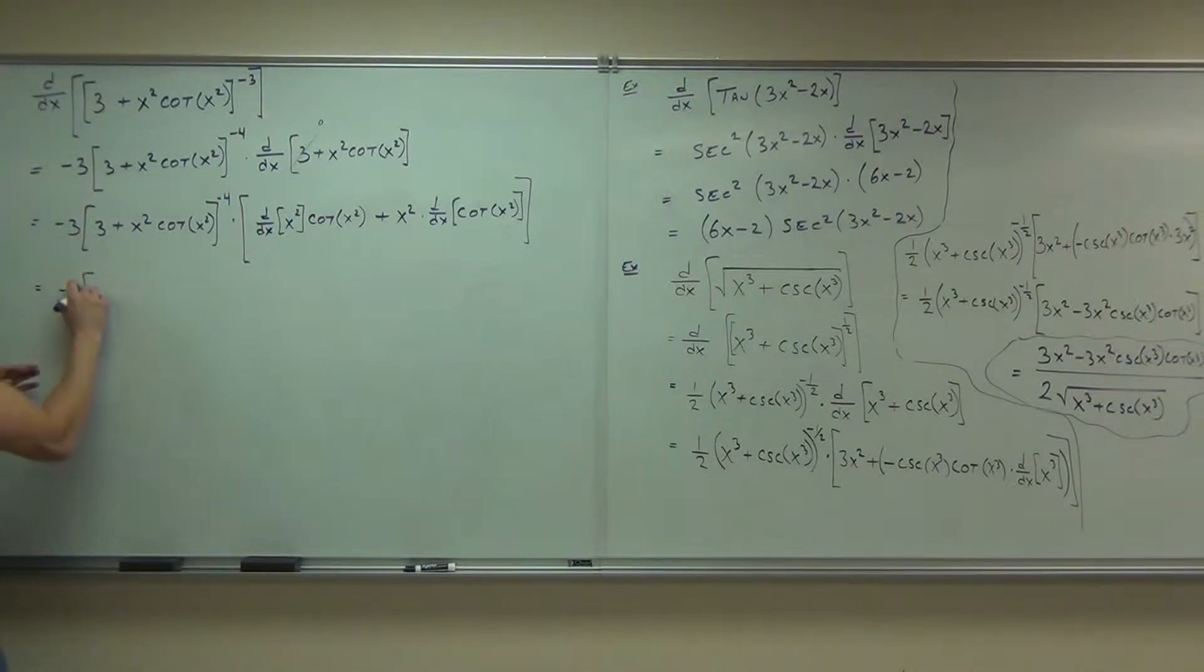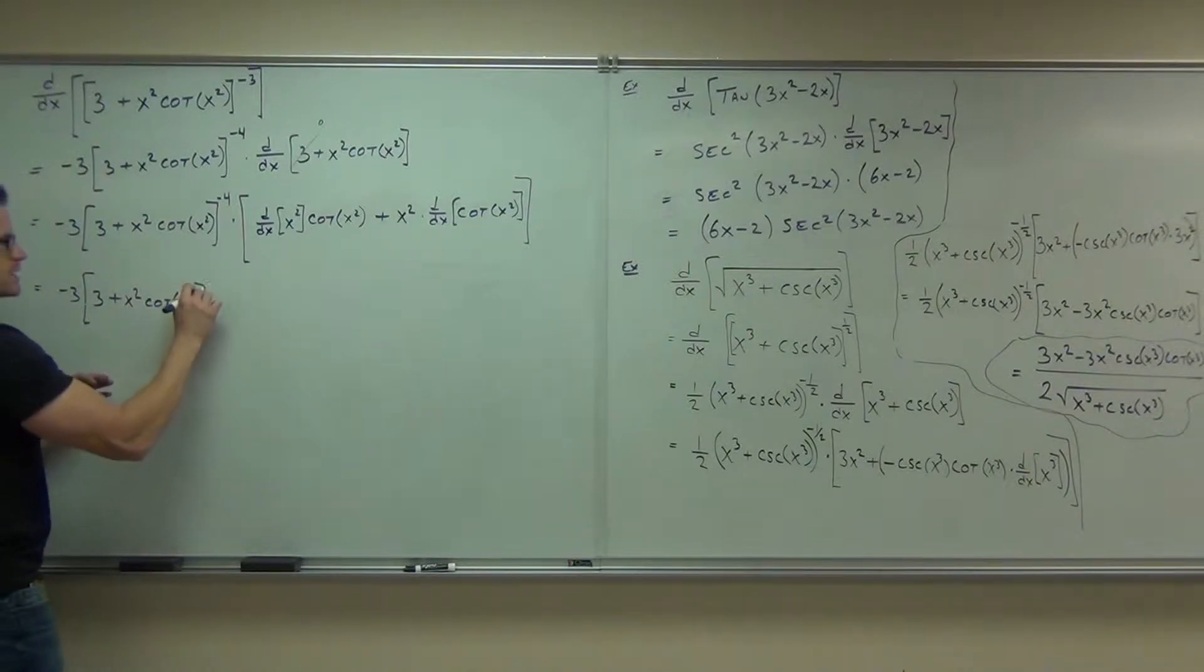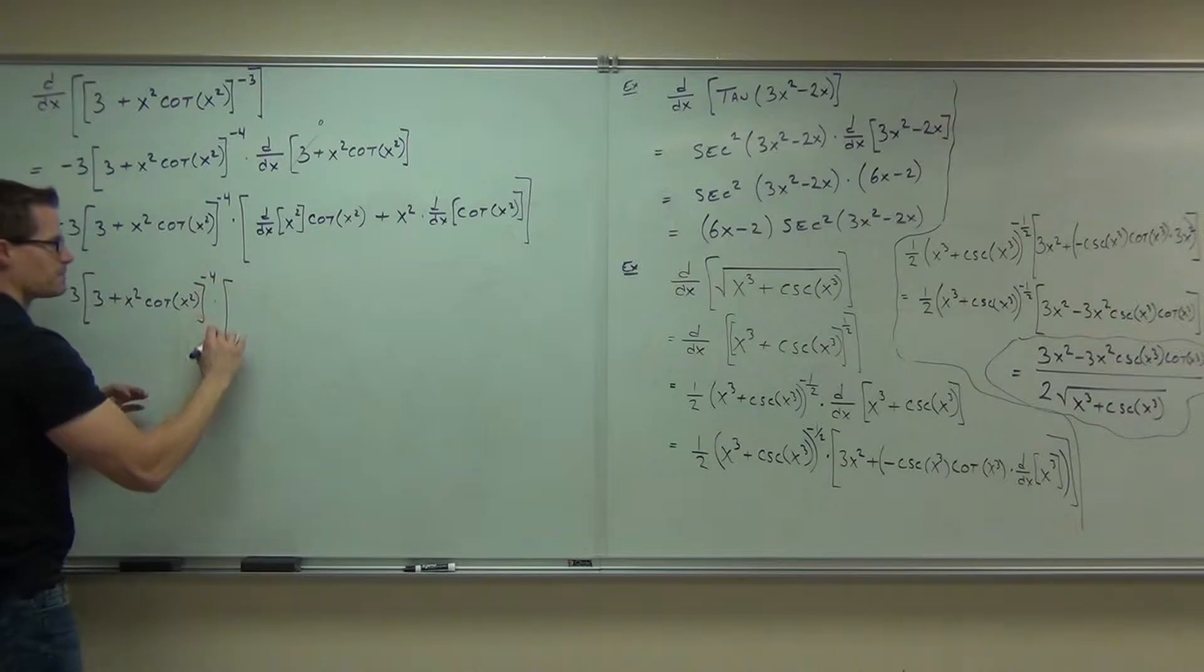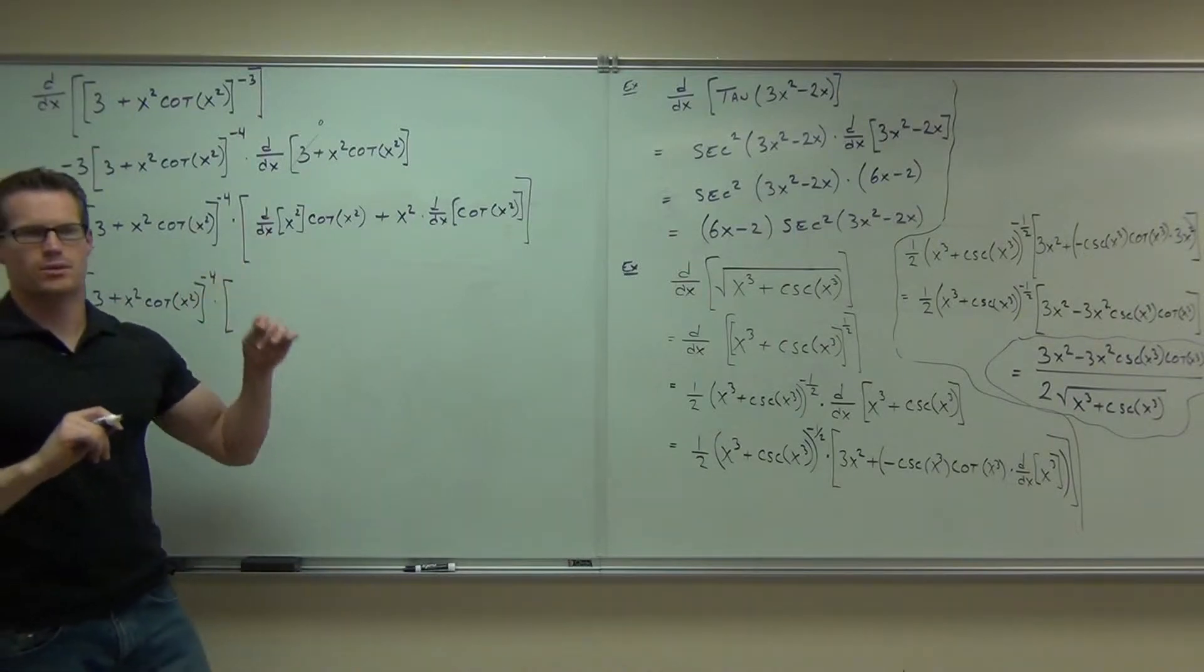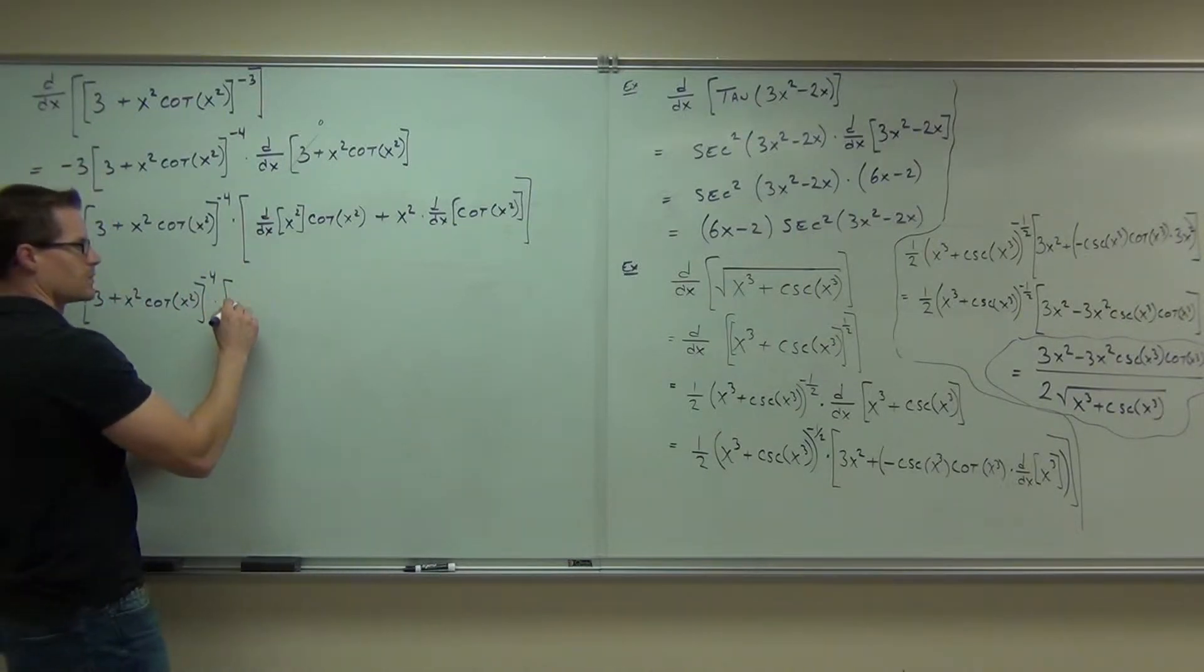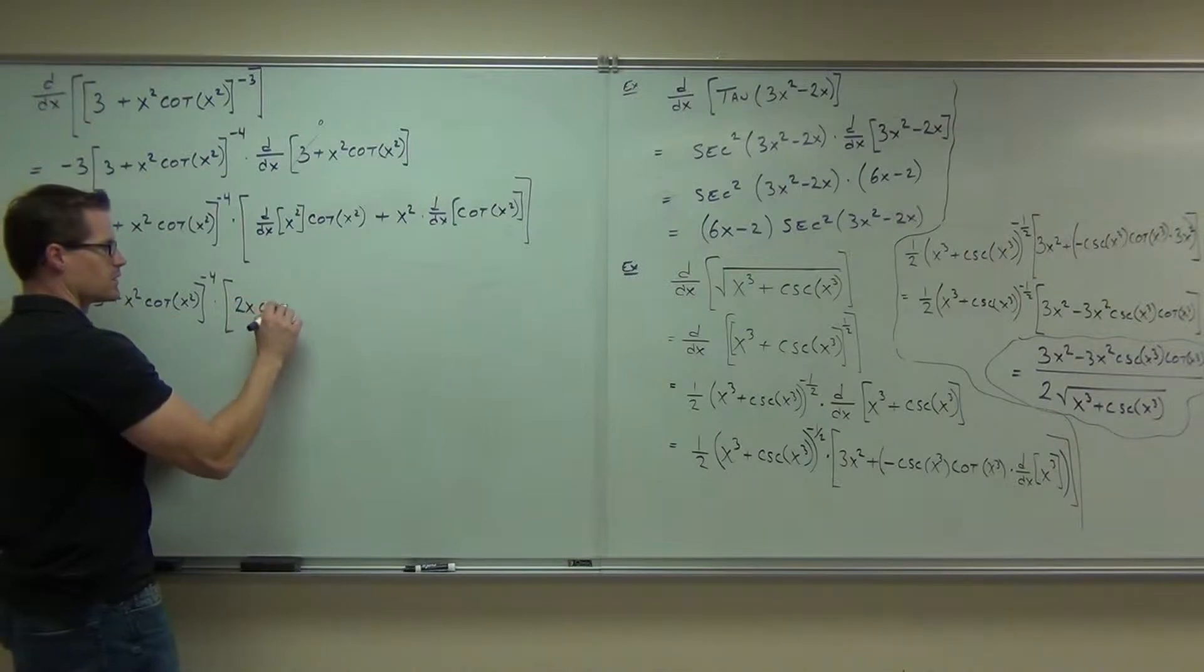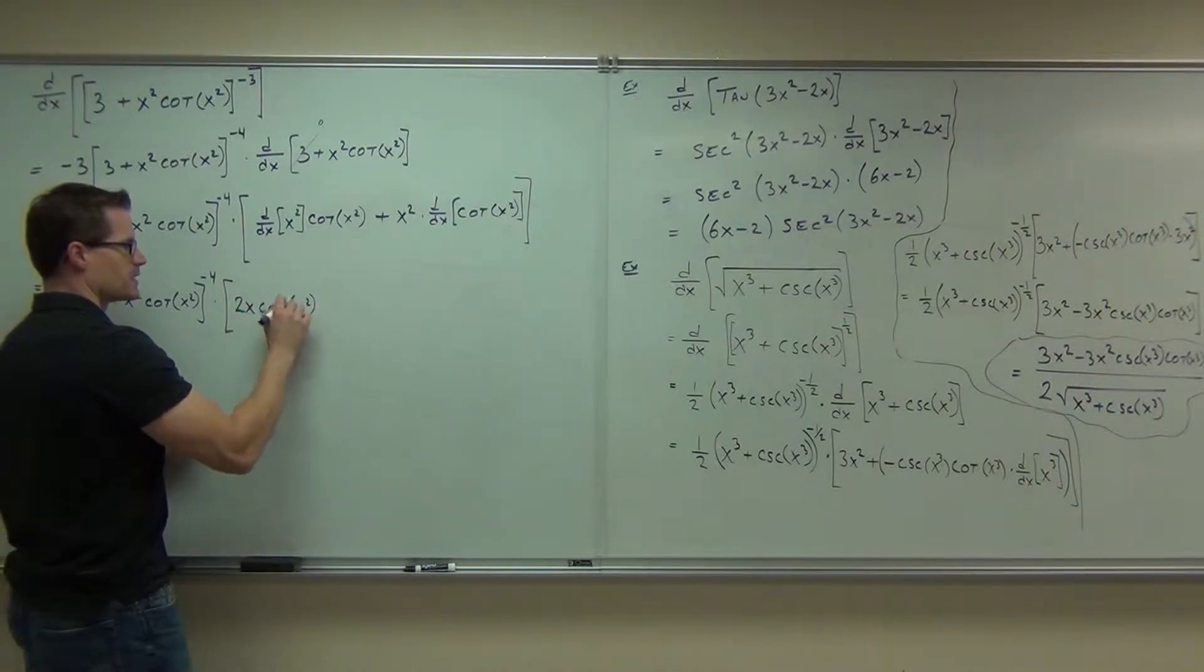Negative 3. 3 plus x squared cotangent x squared to the negative 4 power. Big bracket. Derivative of x squared, everybody, what is that? Well, that's nice. 2x cotangent x squared. Well, we got that done.